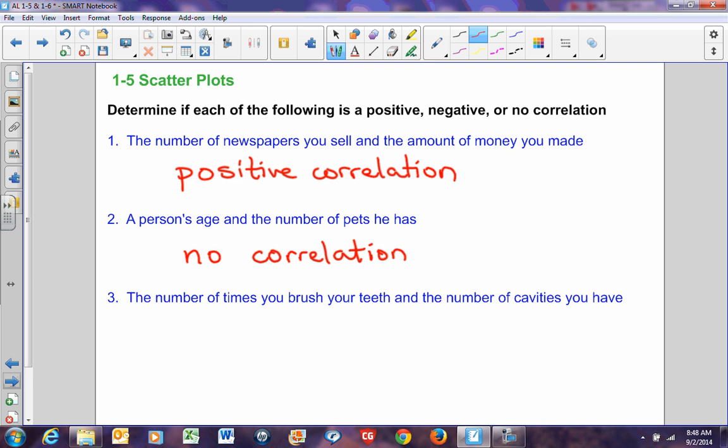Example number three, the number of times you brush your teeth and the number of cavities you have. Well, typically, the more you brush your teeth, the less bacteria you have on your teeth, and therefore, the less cavities you should have. So as number of brushings goes up, number of cavities should go down as a general trend. So this would be considered typically a negative correlation.